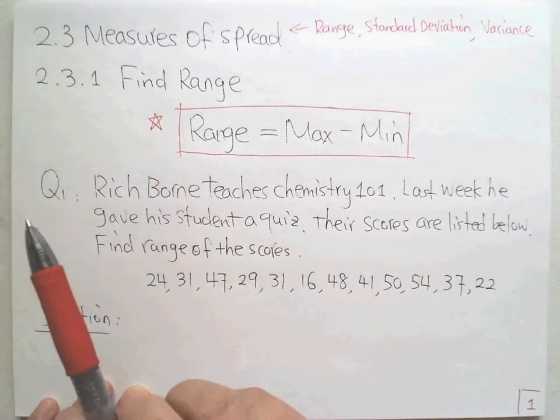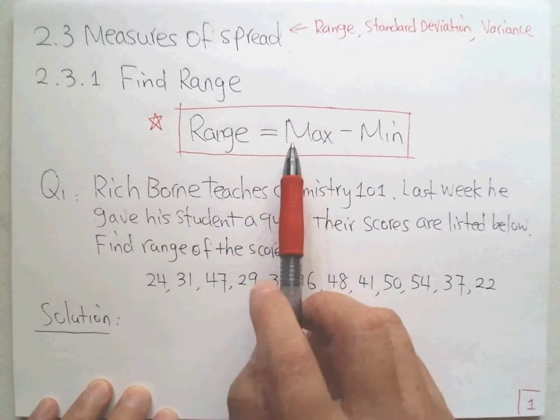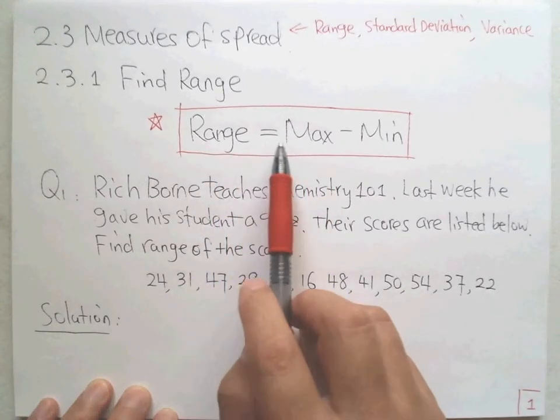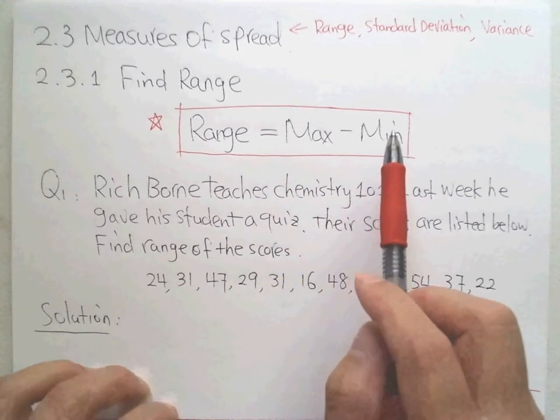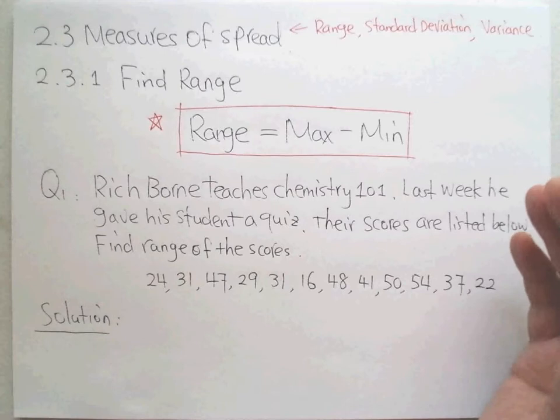What's the definition for range for your data? It is the maximum value of your data minus the minimum. Just the distance between the smallest number and the largest number. Let's show one example.